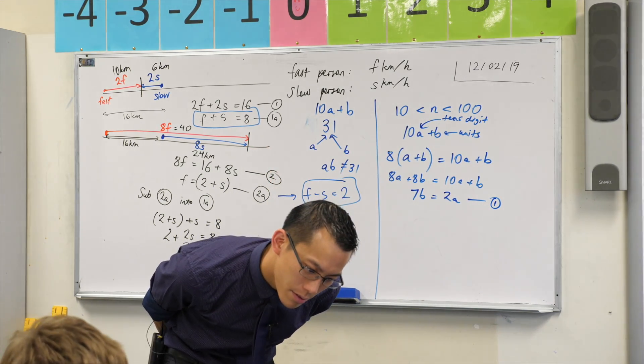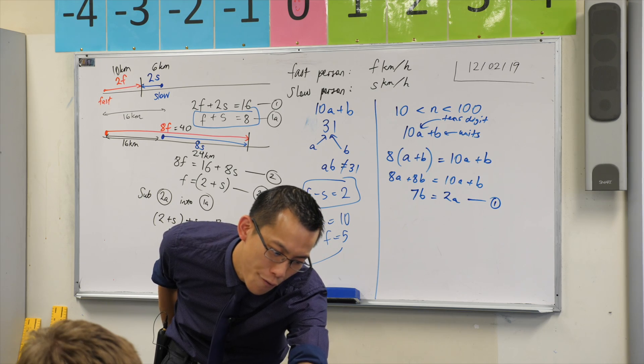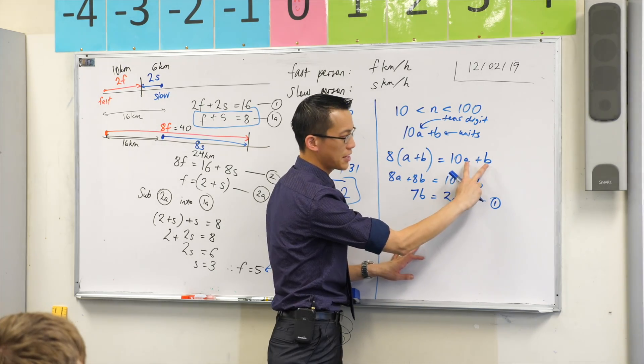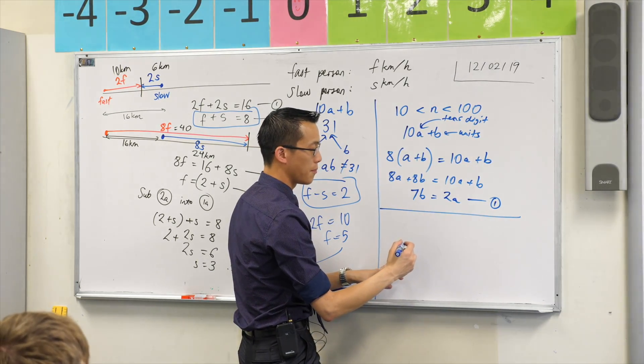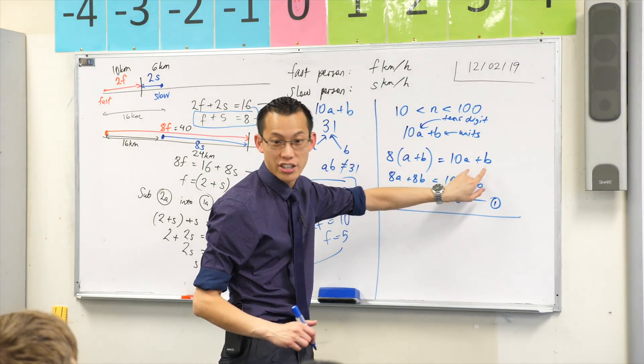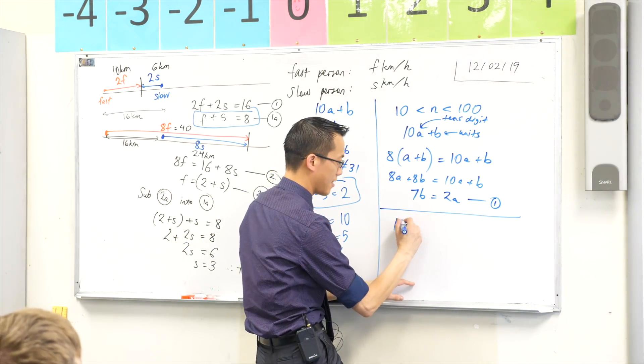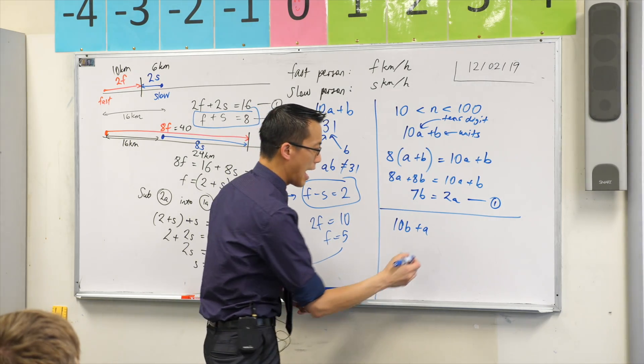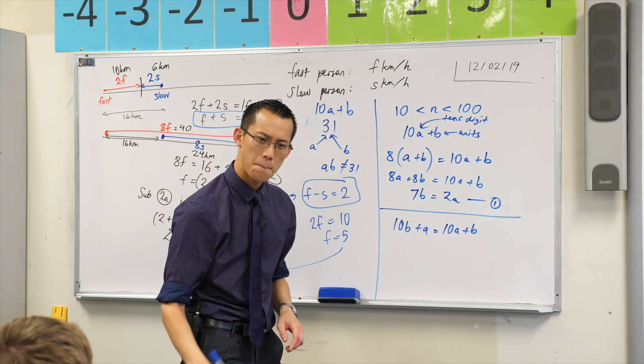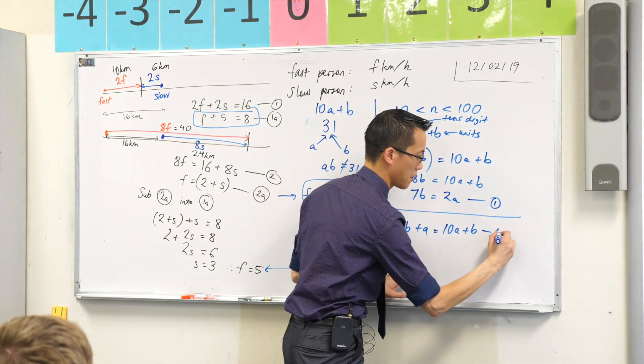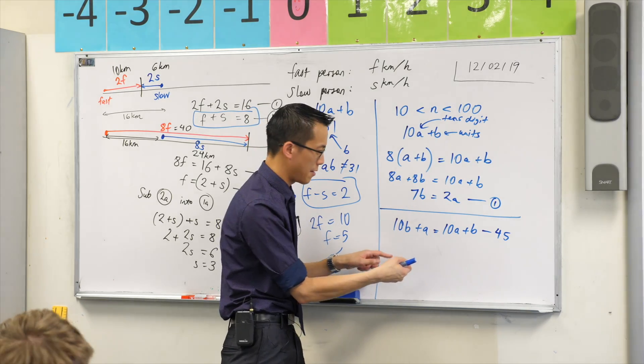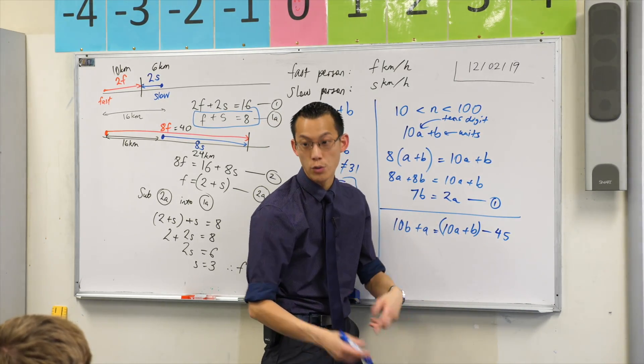And then the other thing they tell us is, if its digits are reversed, it's reduced by 45. So, to reverse the digits is to swap the tens and the units. Actually, I need to switch the B and the A themselves. So, it'll be 10B plus A. So, I've just switched the digits, and that's the same as taking the original number and reducing it by 45. This is me swapping the digits. This is me looking at the original number and subtracting, reducing it by 45.